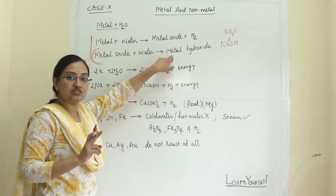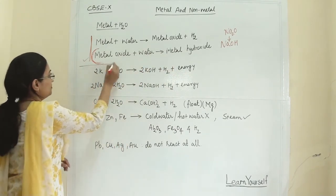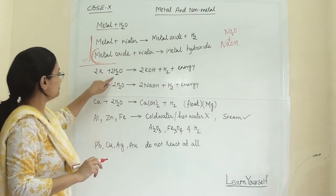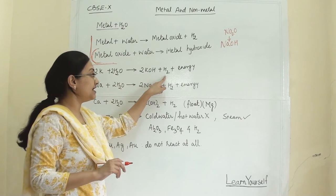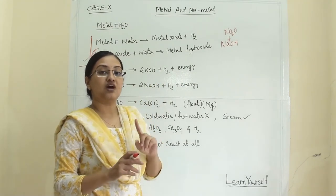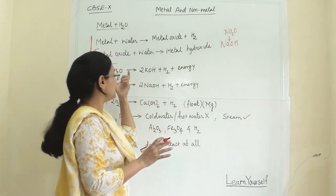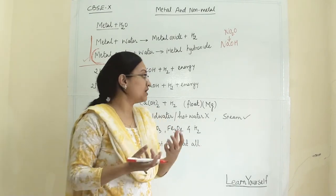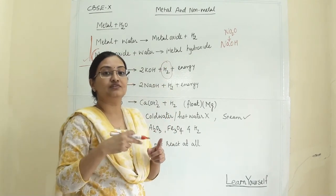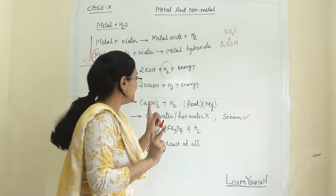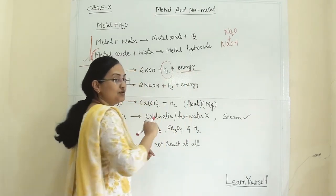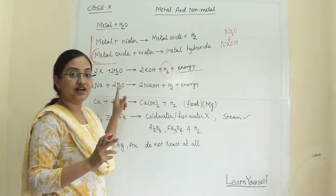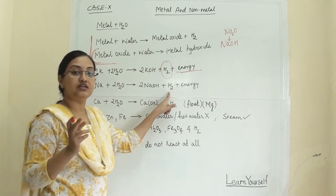The full reaction to form metal hydroxide is only possible with potassium and sodium. When potassium reacts with water it gives potassium hydroxide, hydrogen gas, and energy. Potassium and sodium are so reactive that once they start reacting with cold water they immediately catch fire. The fire is so vigorous that even the hydrogen produced from the reaction gets burned in it, and a large amount of energy is liberated at the end of the reaction.